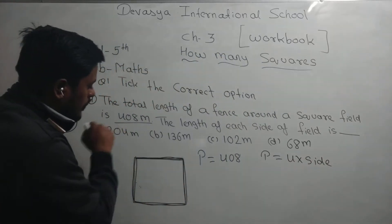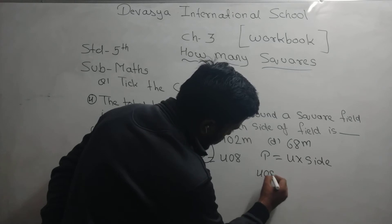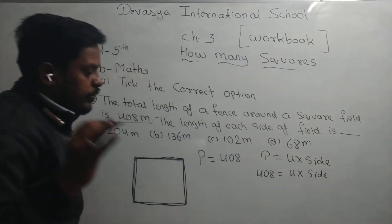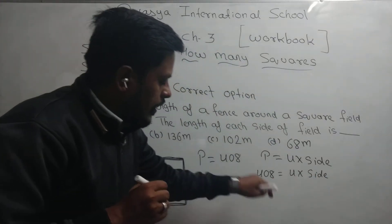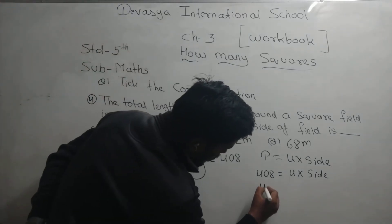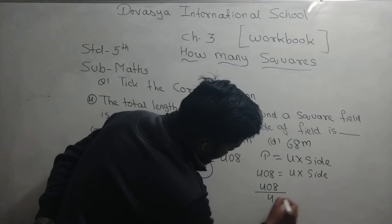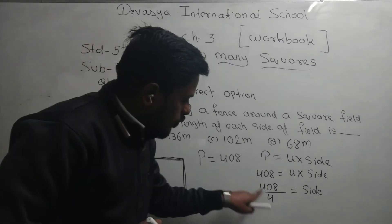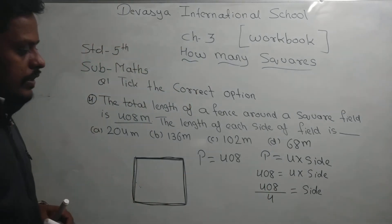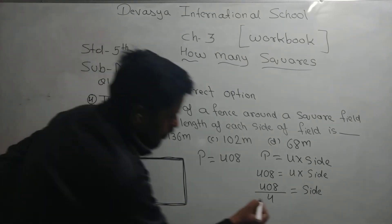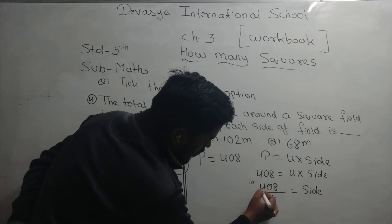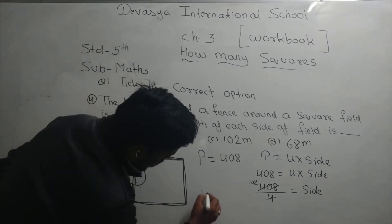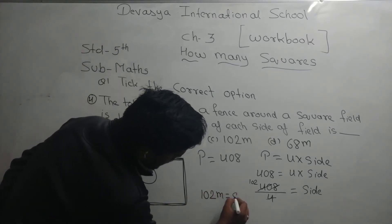How many perimeters are there? 408. So we can write: 408 = 4 × side. What do we need to do? We need to divide by 4. So, 408 divided by 4 equals side. 4 into 40, 4 into 8 — the answer is 102 meters equal to side.